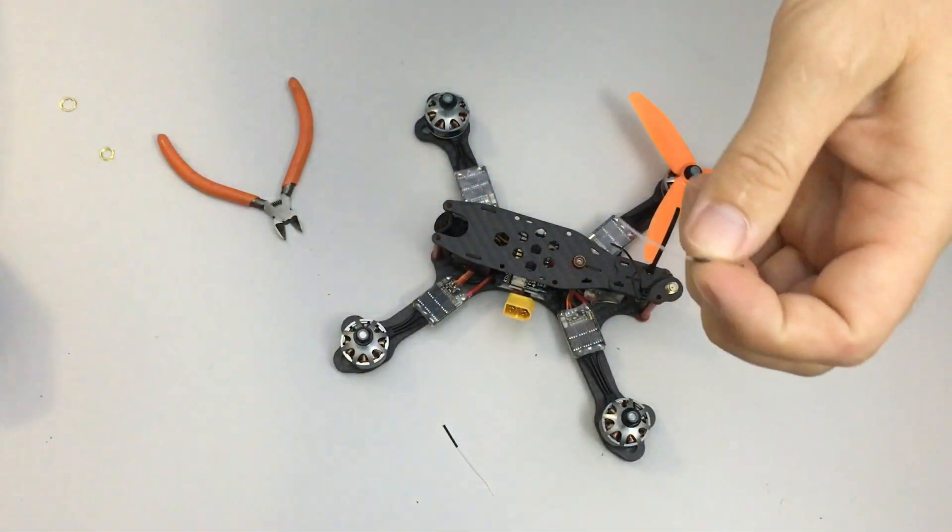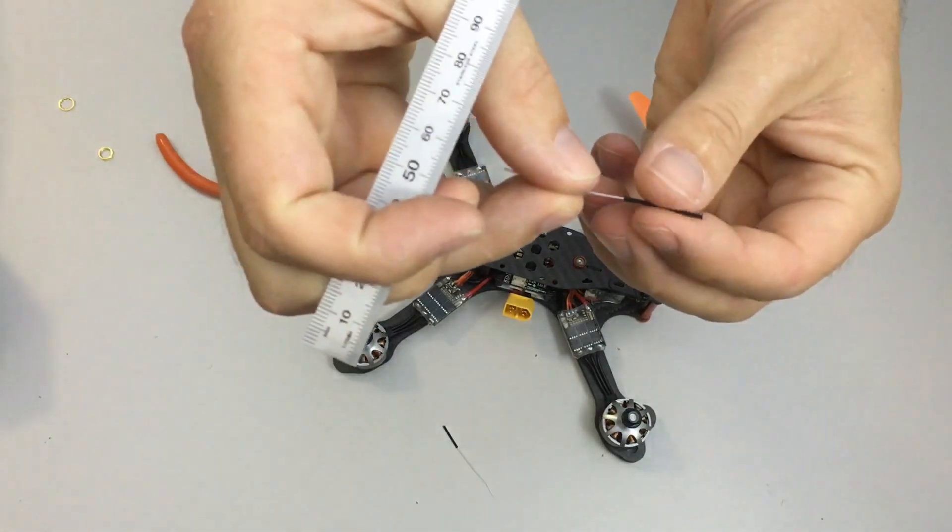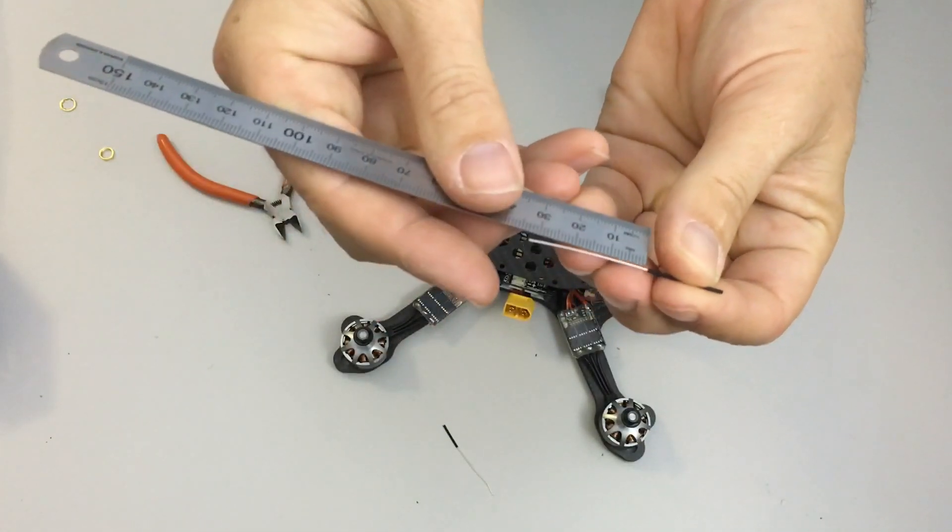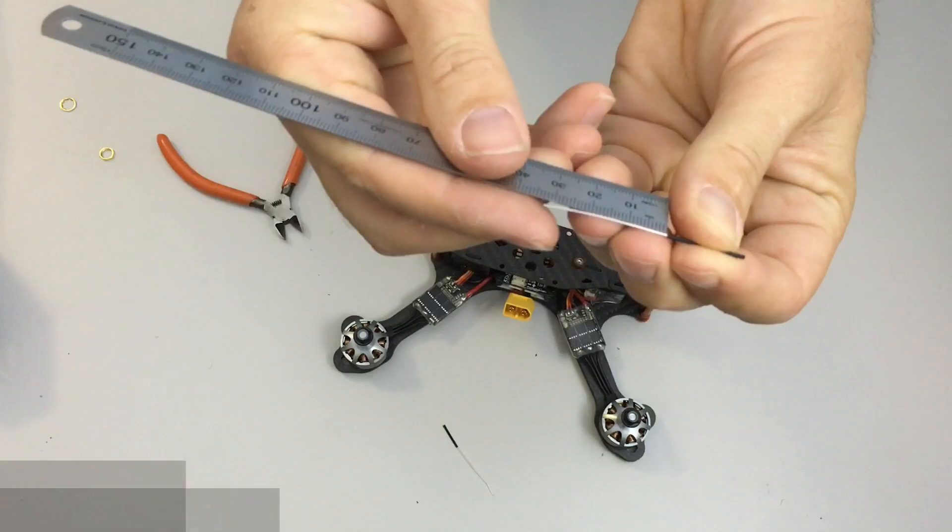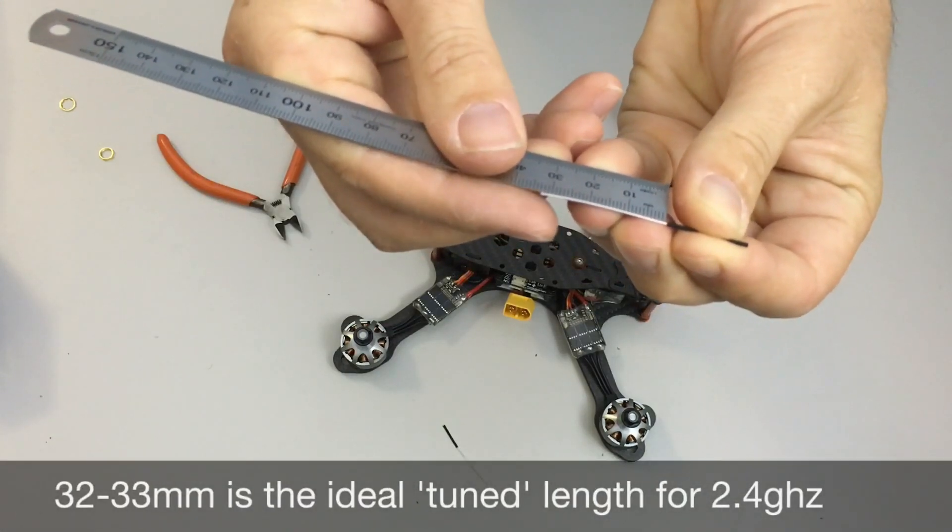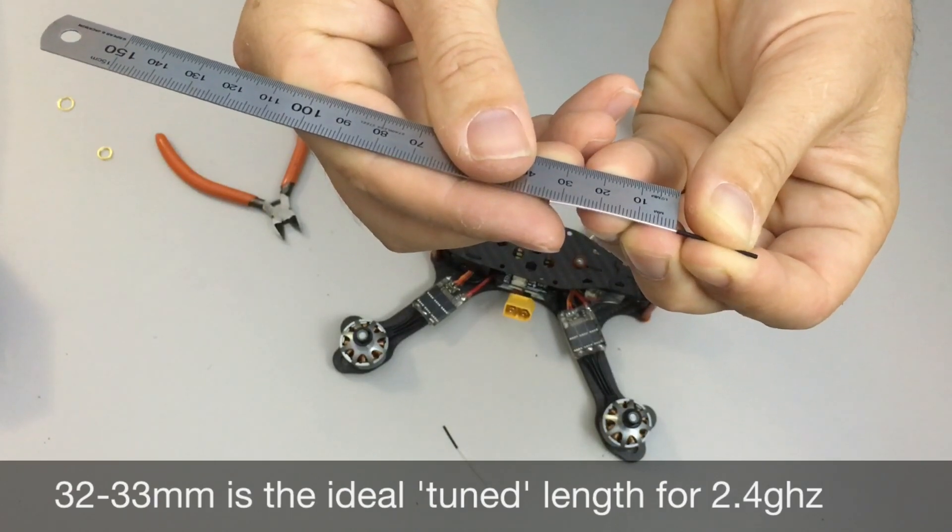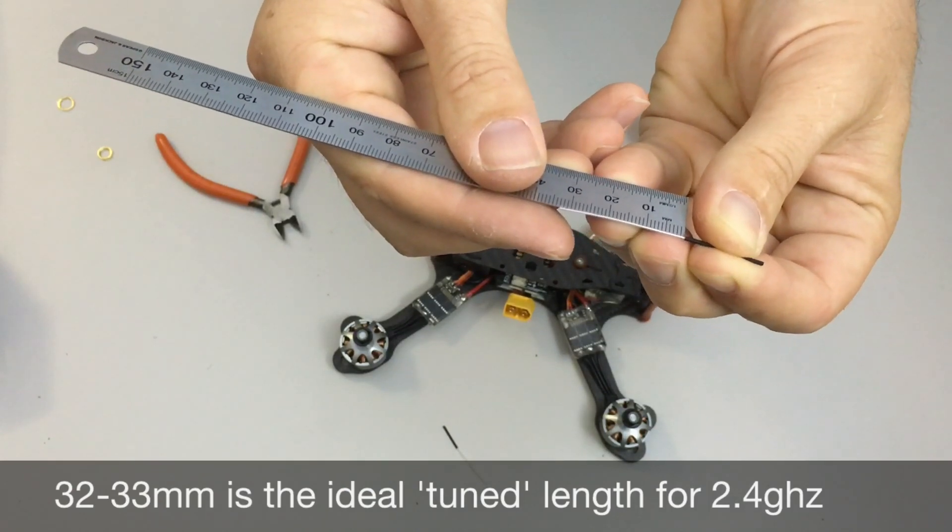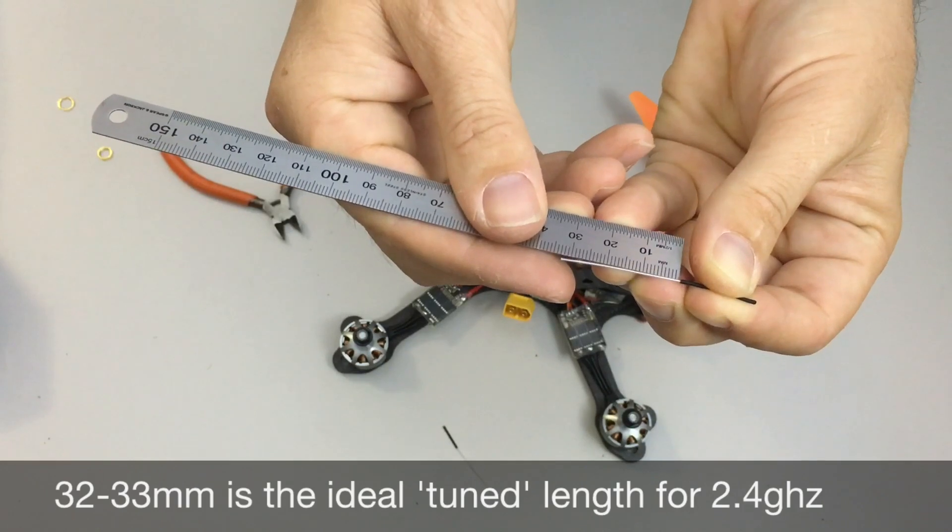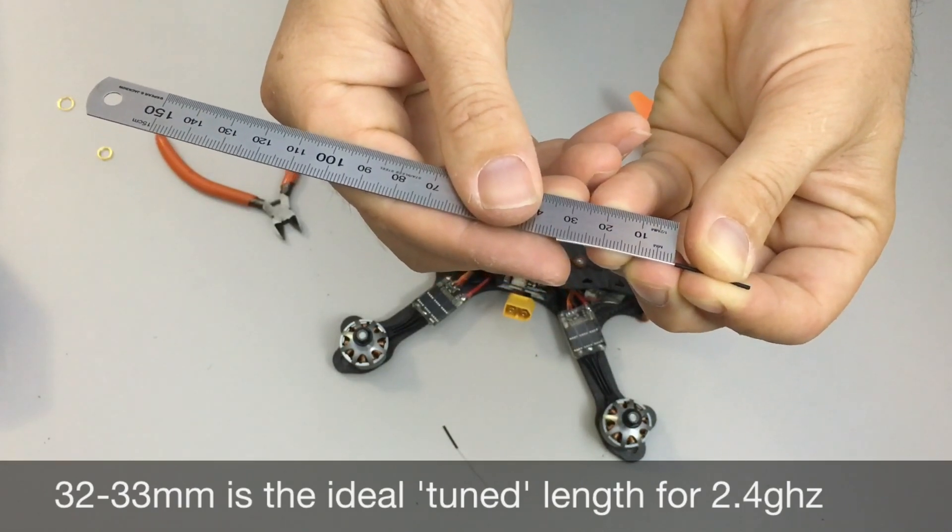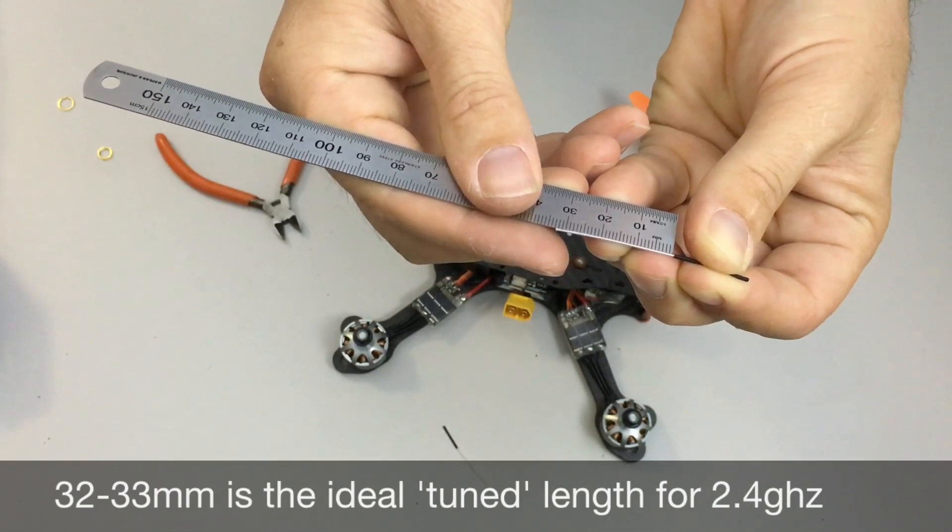Now I'm just going to take a ruler now and I'm going to show you something. This should measure about 32 millimeters. And it does, actually these are a little bit longer on these Frsky X4R ones. My Spektrum ones are always about 32, these are about 33 millimeters.